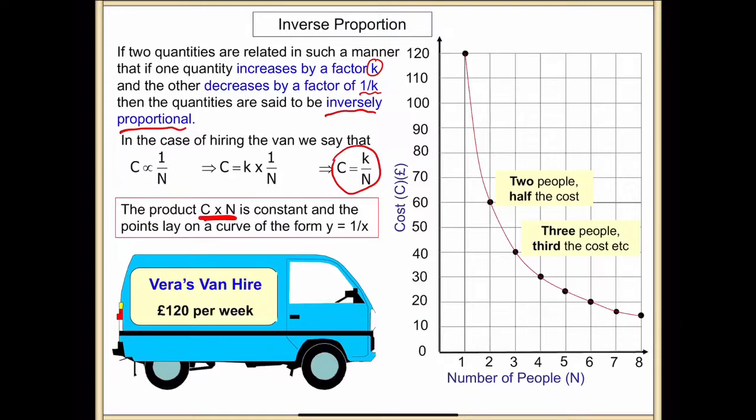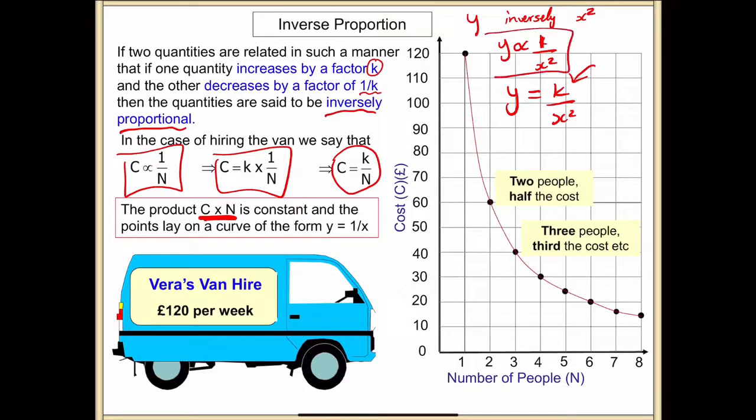Say a question started and said y is inversely proportional to x squared, for example. What would you write? You would start with y inversely proportional to x squared, so you write this first of all to demonstrate that you've identified it's inversely proportional. The next line, you would have to write y equals k over x squared, because that k shows inversely proportional. Simply you write this, then you move to y equals k over x squared.